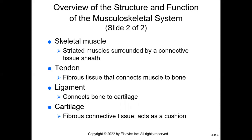There are three types of muscles: skeletal muscle, cardiac muscle, and smooth muscle. Cardiac muscle is found in the heart. Smooth muscle is found in our organs. Skeletal muscle is connected to bones via tendons, and these skeletal muscles are striated — they have lines or stripes.